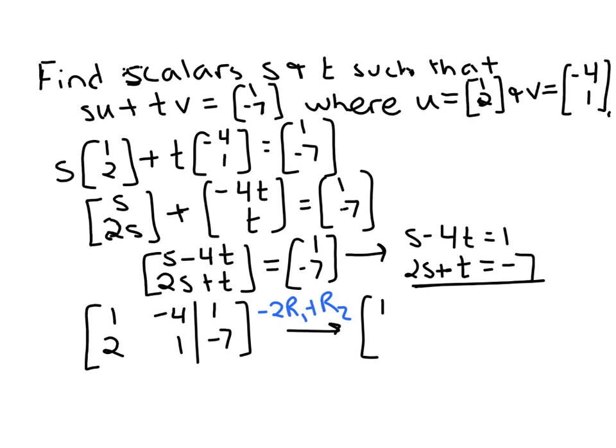The resulting matrix then is, let's see, first row stays the same. Second row, I've got negative 2 plus 2, so 0. Then I've got positive 8 plus 1, so 9. And then negative 2 plus negative 7, so negative 9.